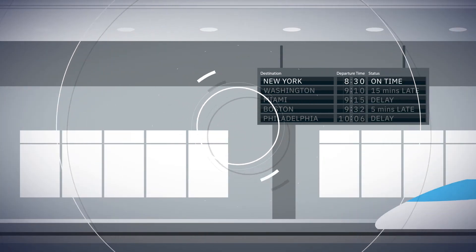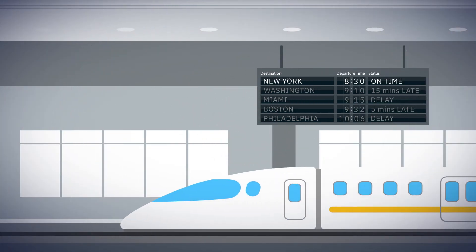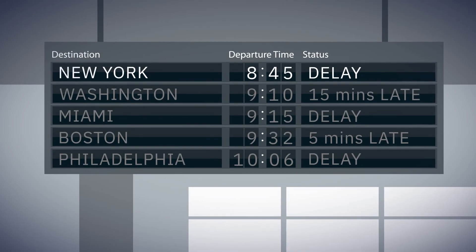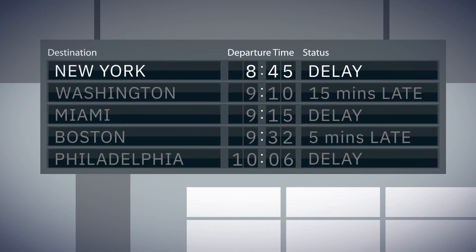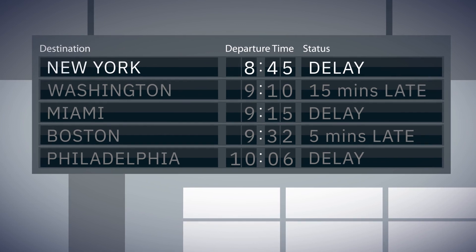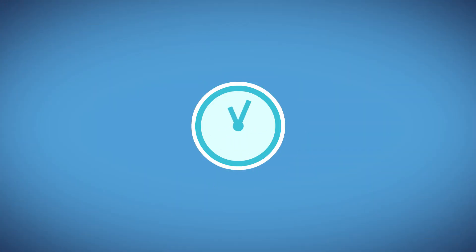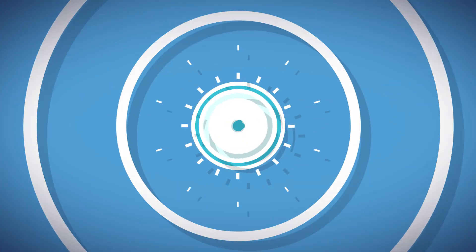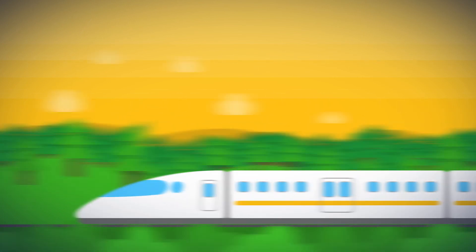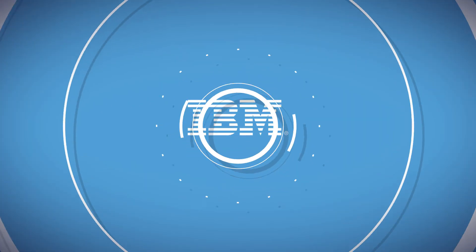With MQ you know about train delays because those station boards across the whole railway network are updated in real time and at the same time, so that you have the right information for your journey home.